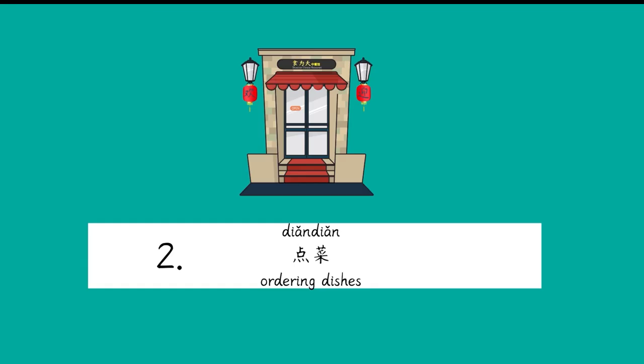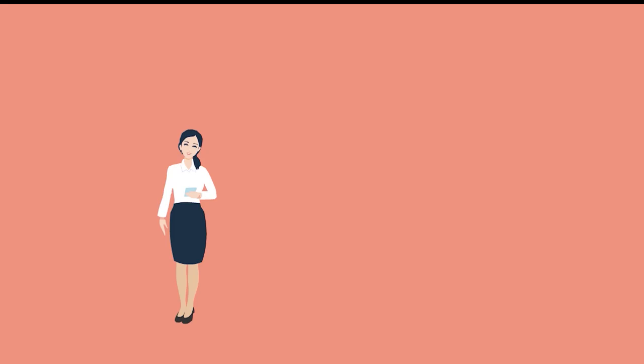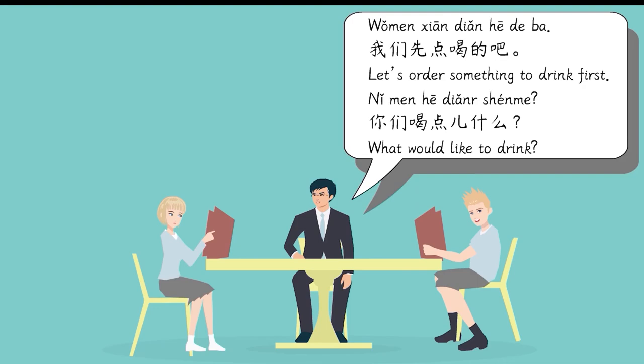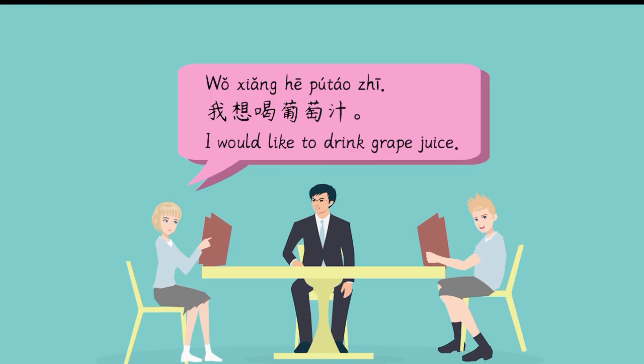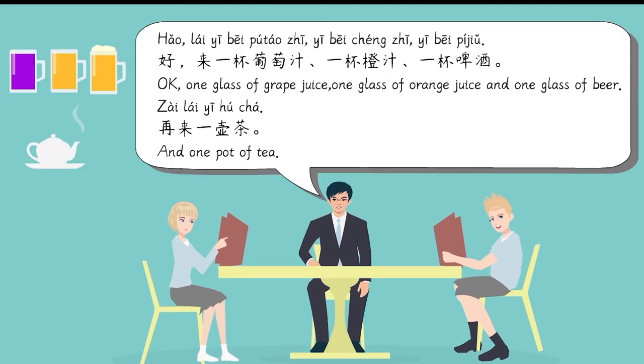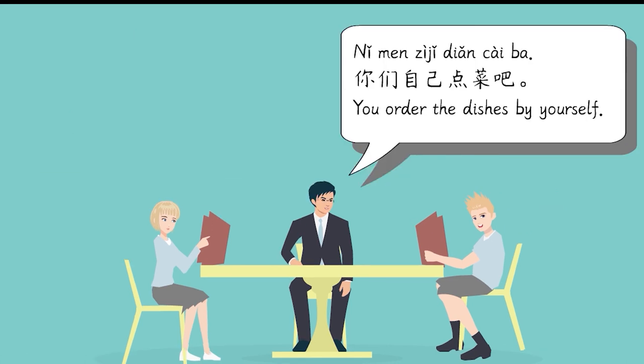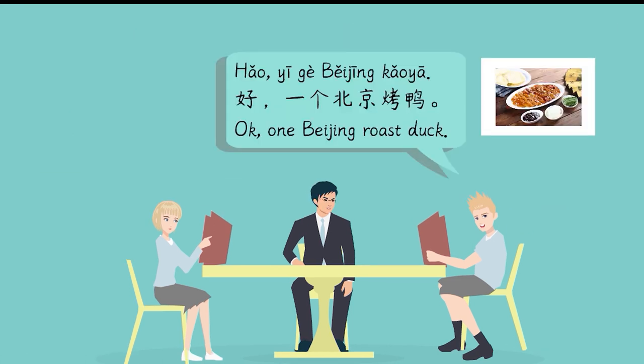对话二,点菜。请问三位来点什么? 我们先点喝的吧。你们喝点什么? 我想喝葡萄汁。我喝橙汁。好,来一杯葡萄汁,一杯橙汁,一杯啤酒。再来一壶茶。你们自己点菜吧。